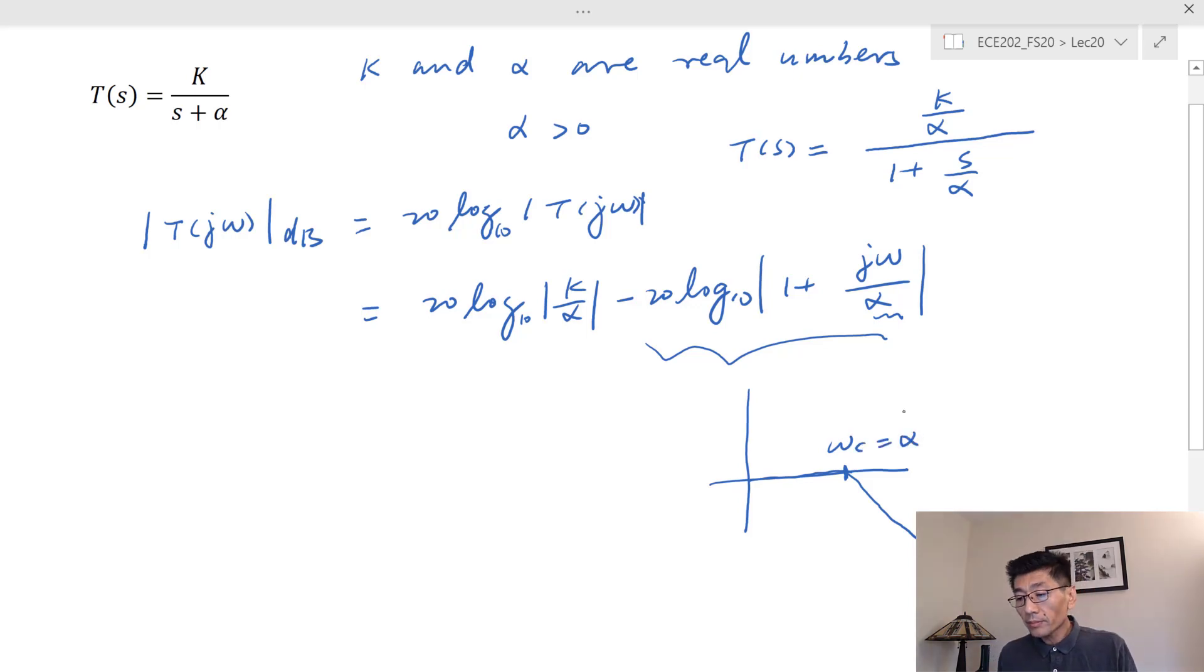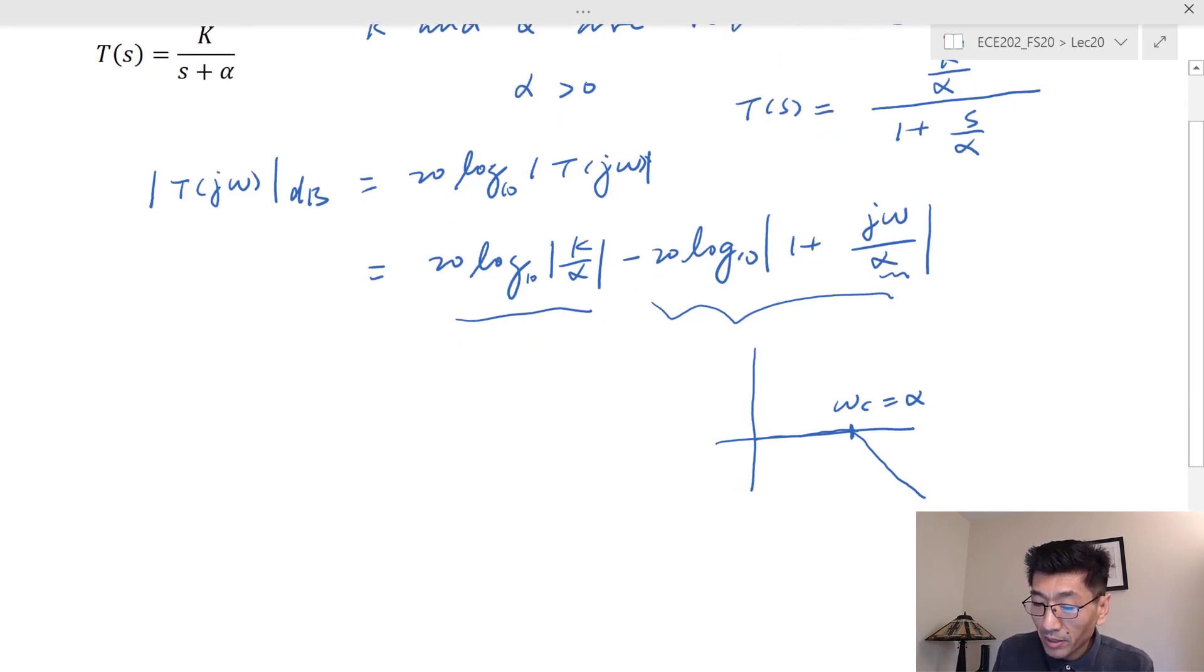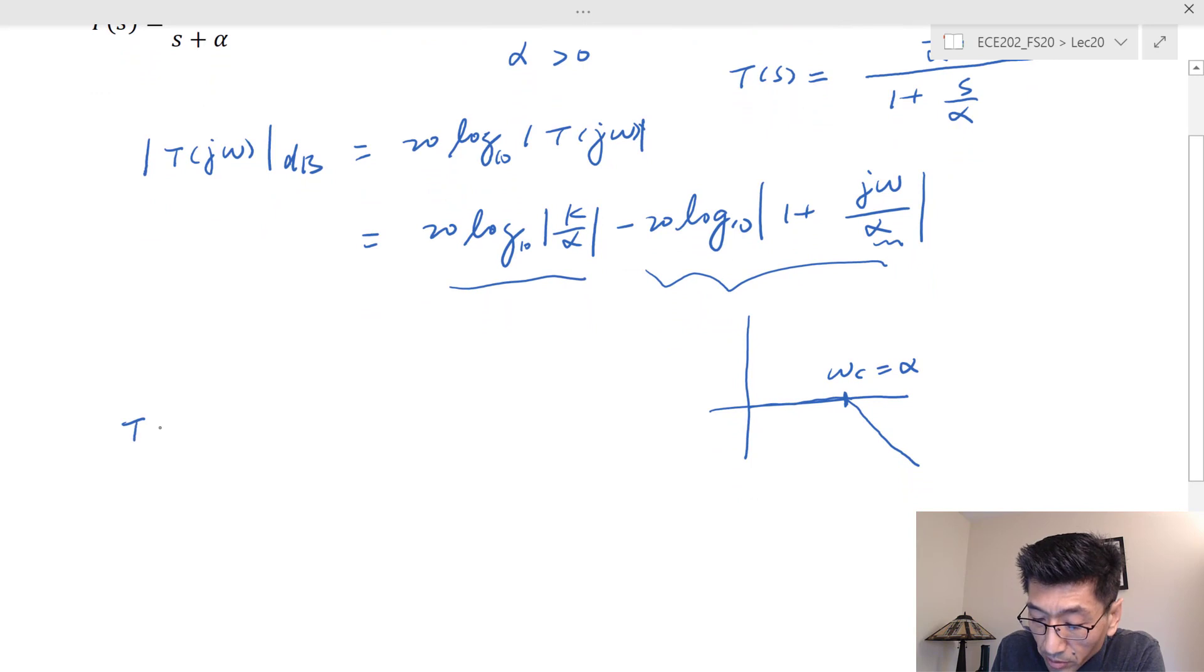The first term just gives a constant number. At low frequency, when omega equals zero, T(0) in dB is just equal to 20 log of k/α. That actually gives us—remember the shape of the low-pass filter?